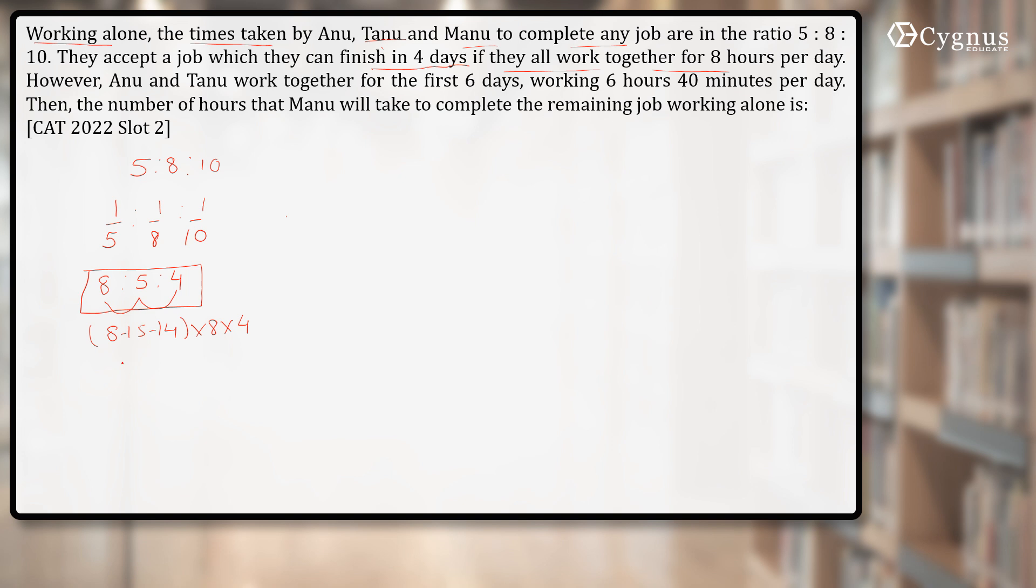So this becomes your total work. 8 + 5 + 4, that is 17, into 32. 17 into 32 will give you 510 plus 34, that is 544 units. So this becomes your total work.